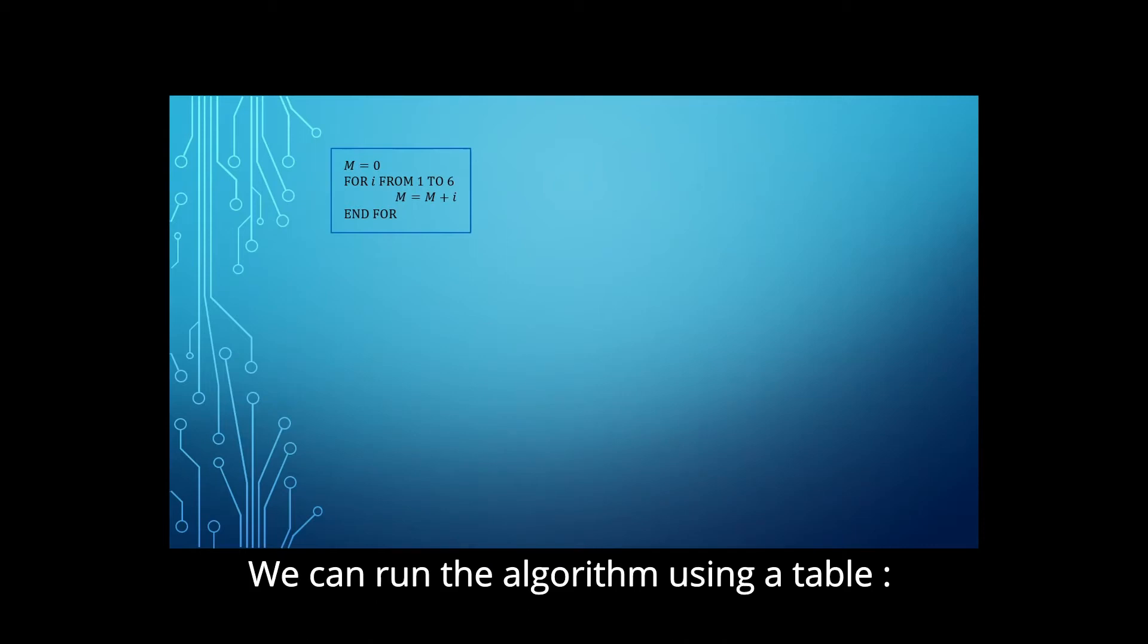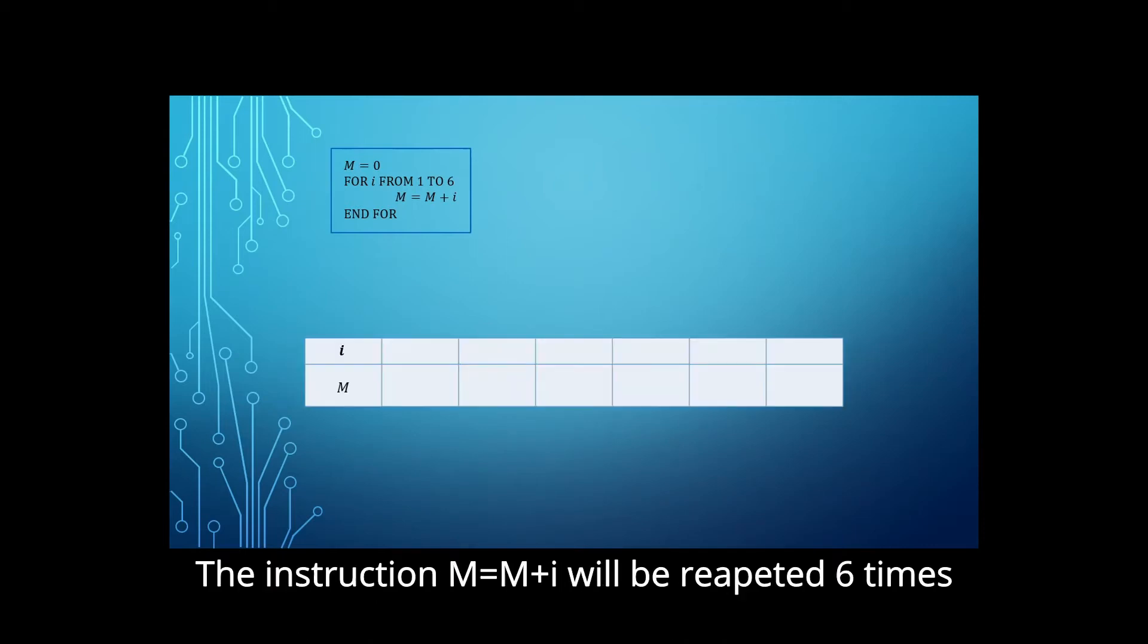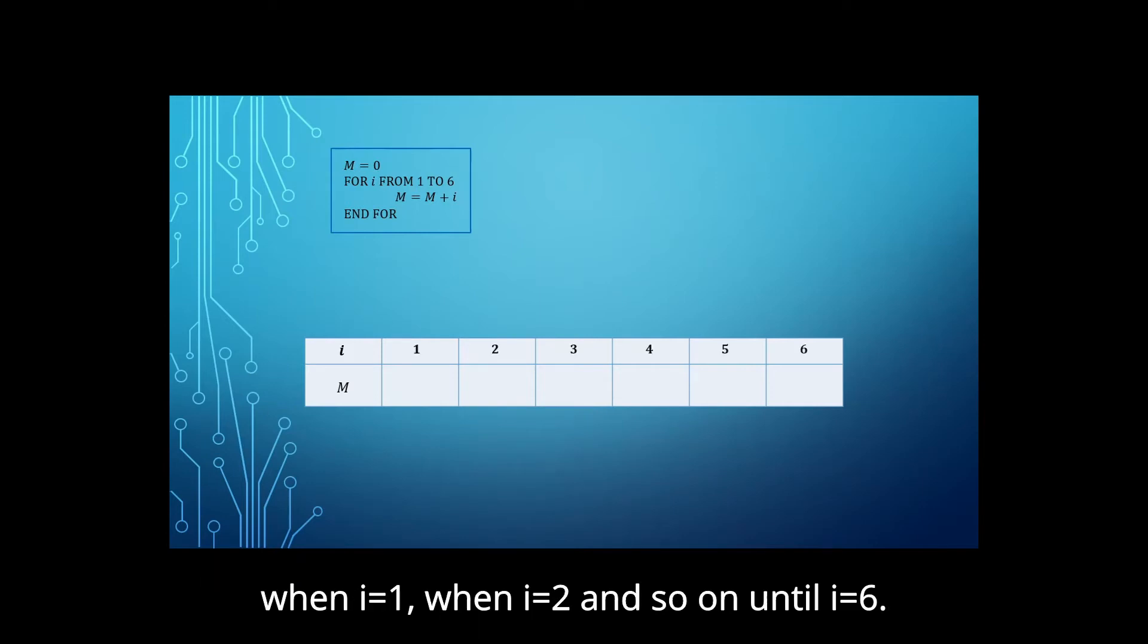We can run the algorithm using a table. The instructions m equal m plus i will be repeated 6 times when i equal 1, when i equal 2, and so on until i equal 6.